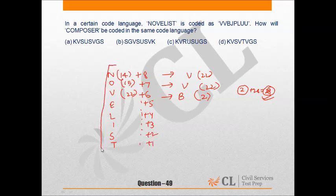Now for COMPOSER: C-O-M-P-O-S-E-R. The position of C is 3. 8 will be added to 3, that will give us 11. 11 is the position of K.